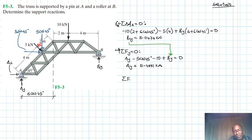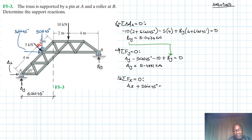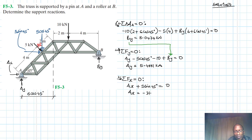Finally, summation of forces in the X direction equal to zero — taking the positive X direction as reference: AX plus 5 sin 45 equals zero. Therefore AX equals minus 5 sin 45, giving AX equal to 3.535 kilonewtons.